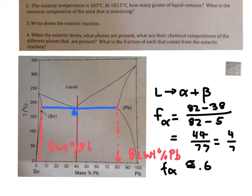The fraction of beta, therefore, is 0.4. And that's what we were looking to find. So what we know is that when liquid converts into alpha and beta, it forms 60% alpha, 40% beta.